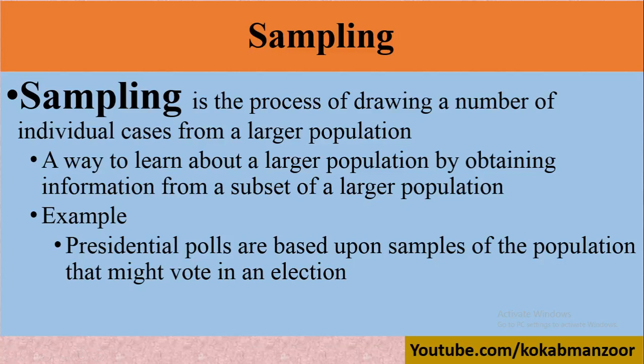All of what we have discussed — this entire process — is called sampling. It is the process of drawing a number of individual cases from the larger population. For example, from college students, we are selecting some people. That process of selecting is called sampling, and the 40 students who are selected are called the sample.